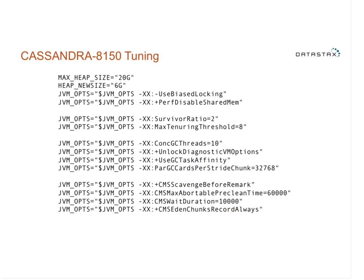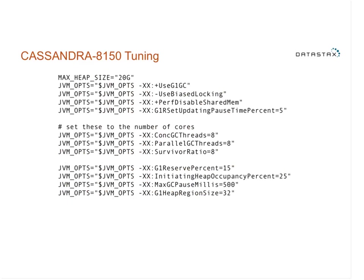In terms of GC performance tuning: there are the CASSANDRA-8150 tunings for CMS. Tuning CMS is a lot of art and requires multiple iterations. Instead of CMS, we're pushing people toward G1 tuning from CASSANDRA-7486. You get very close to CMS throughput but it's much more reliable and less likely to go sideways.